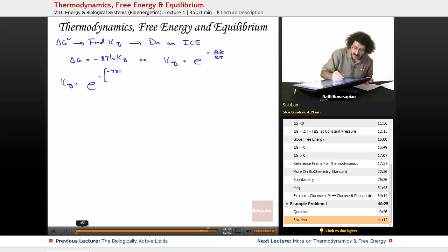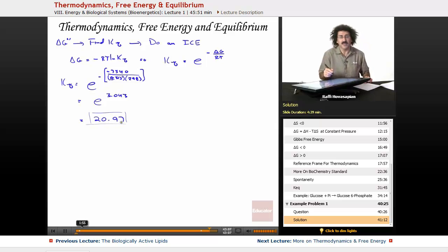The delta G was negative 7.54 kilojoules per mole, so negative 7540 joules per mole over RT, which is 8.315, and we have 298 because we're running this under standard conditions, 25 degrees Celsius. What you end up with is e to the 3.043, and you get 20.97. So our Keq is 20.97. Now that we know what the Keq is, now we'll do the equilibrium part.